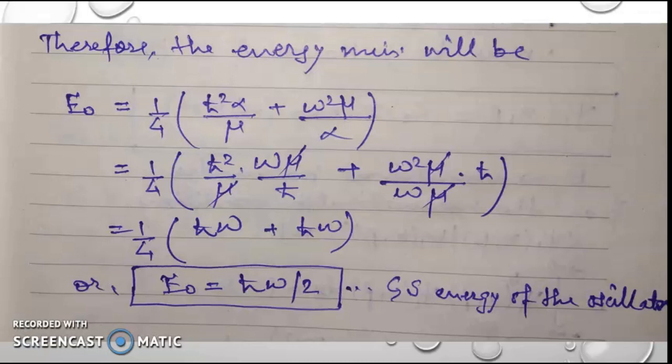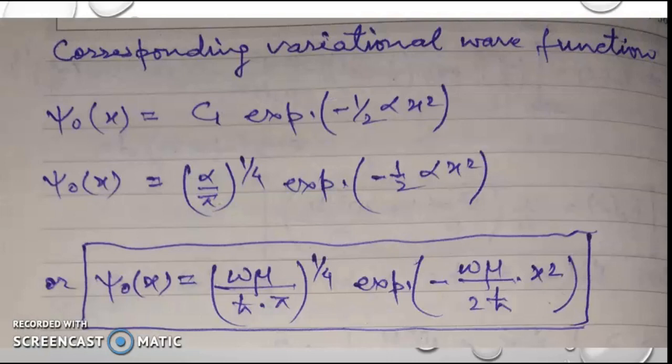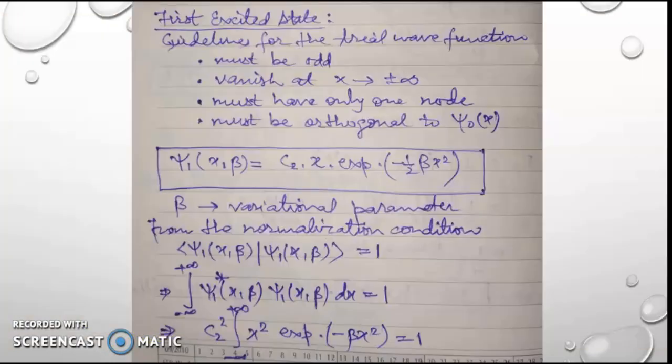Using the value of α obtained in the expression for ψ₀, that is the ground state wave function ψ₀(x) = c₁ exp(−½αx²), we obtain the final expression for the ground state wave function ψ₀(x).